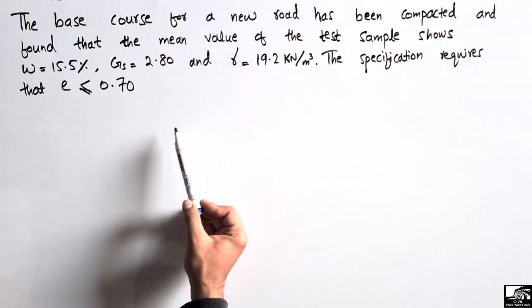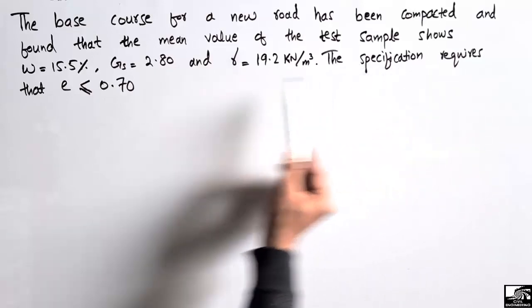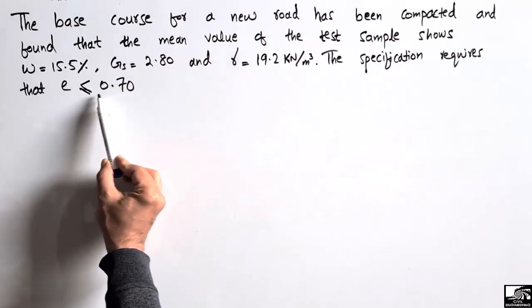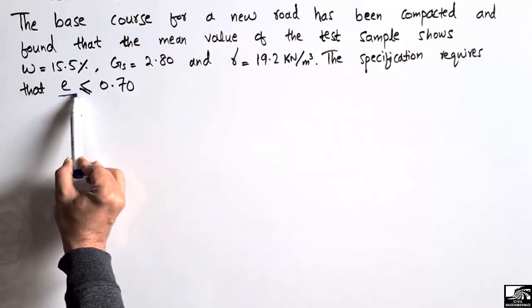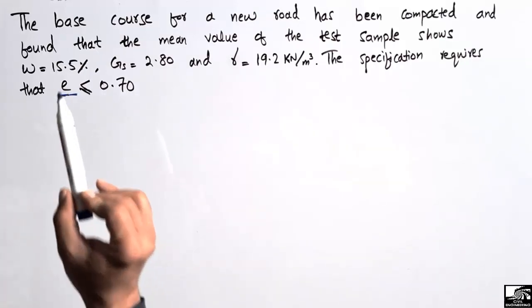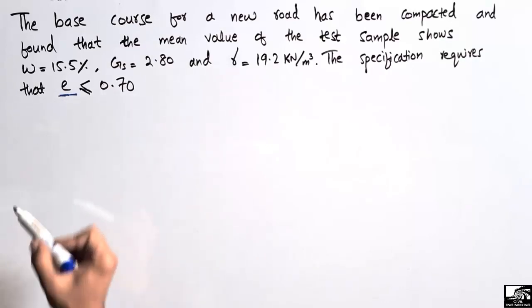The specification requires that it should be always or it should be less than 0.70. So we should find the void ratio such that it should be less than or equal to 0.70.